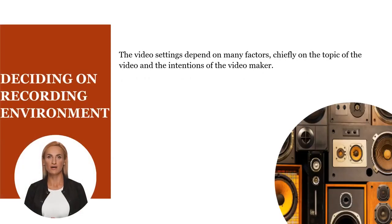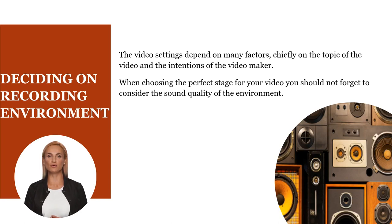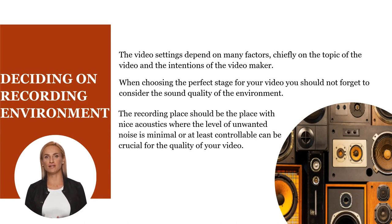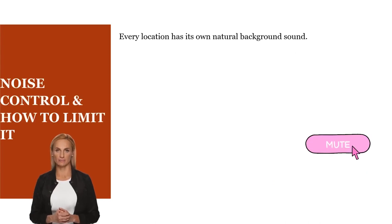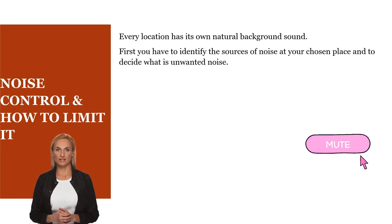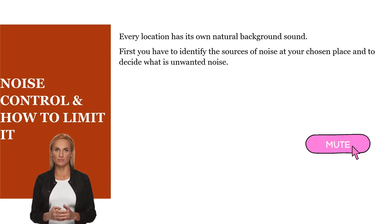Of course, the video settings depend on many factors, chiefly on the topic of the video and the intentions of the video maker. When choosing the perfect stage for your video, you should not forget to consider the sound quality of the environment. Deciding on a recording place with nice acoustics where the level of unwanted noise is minimal or at least controllable can be crucial for the quality of your video. Every location has its natural background sound. Before you start recording, you have to identify the sources of noise at your chosen place and decide what is unwanted noise and if it is possible to control it.